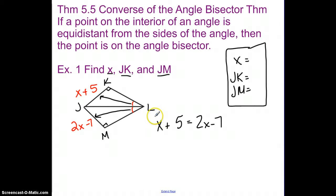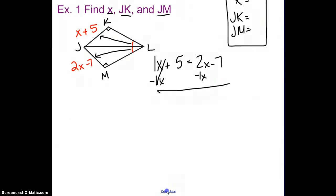So in this one, I'm going to add my 1 here, and I'm really just going to solve for X first, and then deal with JK and JM. So I'm going to start by subtracting 1X from both sides. These cancel. So this is 5 equals 1X minus 7.